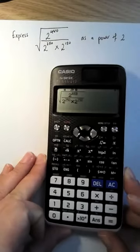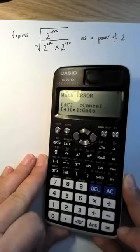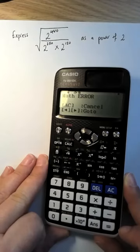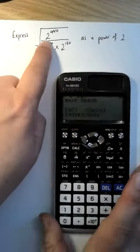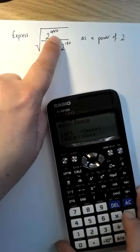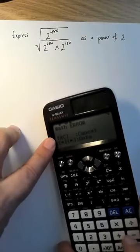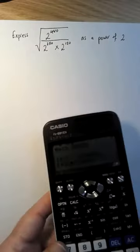If you do put it into your calculator and click equals, it actually says math error. I don't think I'm doing anything wrong. I think it's the fact that 2 to the power of 480 is such a huge number that the calculator can't manage it, which I find really fascinating.